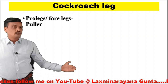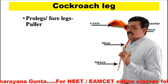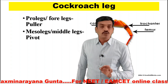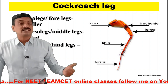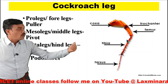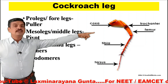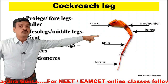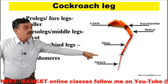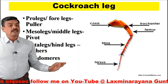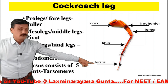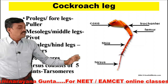The cockroach has three pairs of legs: prolegs (also called pullers), mesolegs (also called pushers or pipers), and hind legs (metathoracic legs, also called pushers). Each leg consists of five podomeres. The first podomere is the coxa, the second is the trochanter, the third is the femur, the fourth is the tibia, and the fifth is the tarsus. The tarsus, the last podomere, again consists of five joints called tarsomeres.